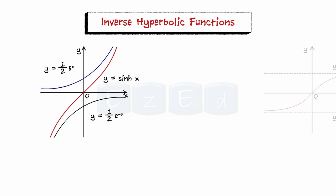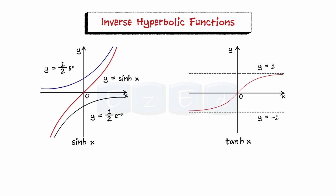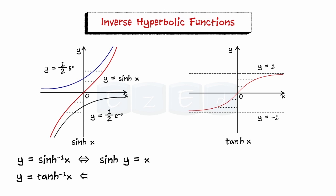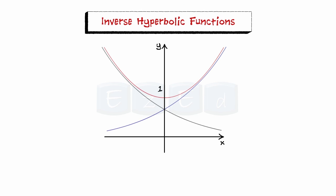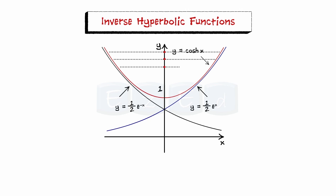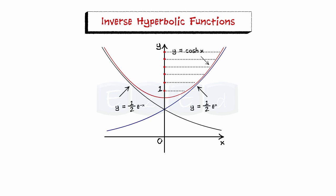Going back to the graphs of sinh x and tanh x: both are one-to-one functions, so they have inverse functions denoted sinh⁻¹ and tanh⁻¹. We have y = sinh⁻¹x if and only if sinh y = x, and y = tanh⁻¹x if and only if tanh y = x. The graph of cosh x shows it is not one-to-one, but when restricted to [0, ∞) it becomes one-to-one. Hence y = cosh⁻¹x if and only if cosh y = x and y ≥ 0. The remaining inverse hyperbolic functions are defined similarly.